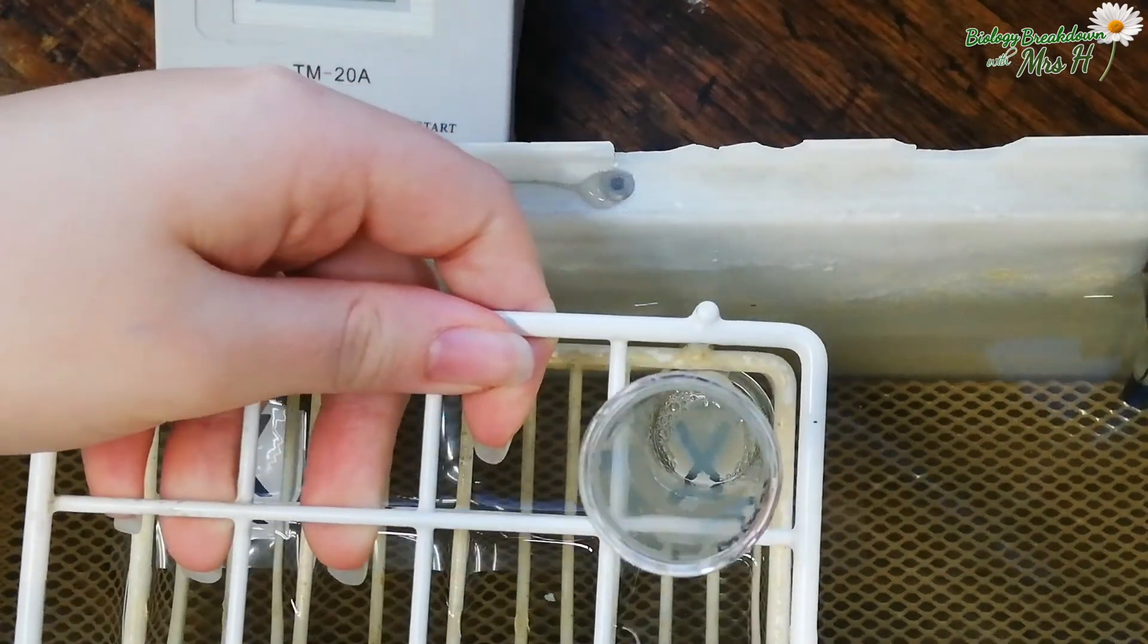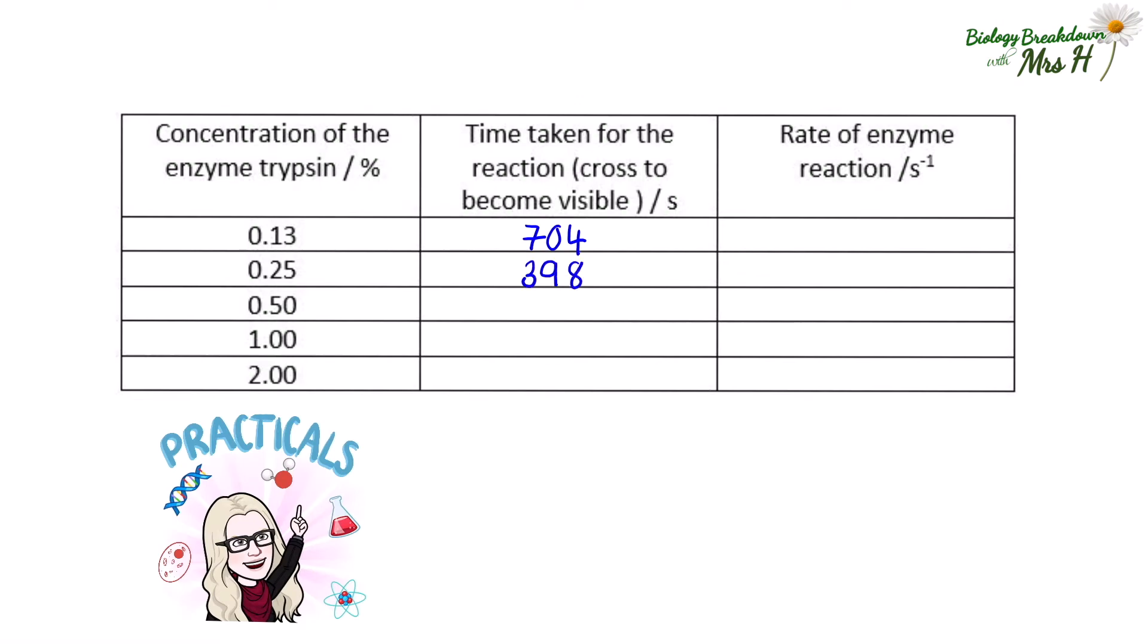Each time you'll be recording the time in seconds into your table and then once you've done that you're going to calculate the rate of reaction. You do this by taking 1 and dividing it by time and then you can pop your rates into the table there.